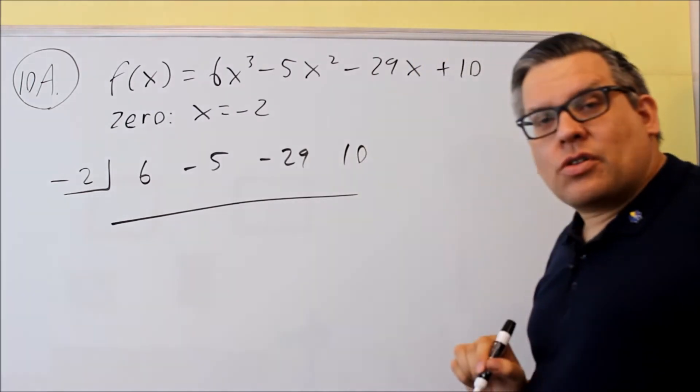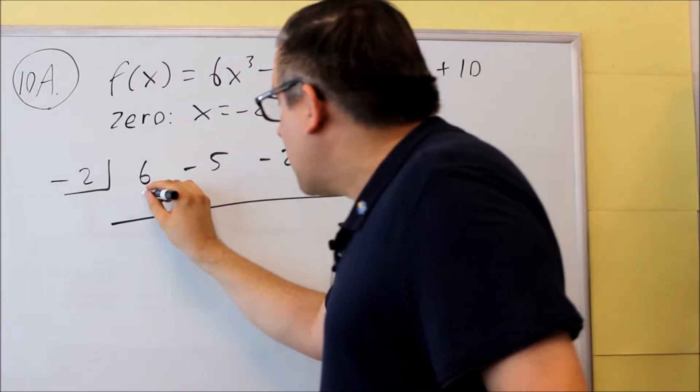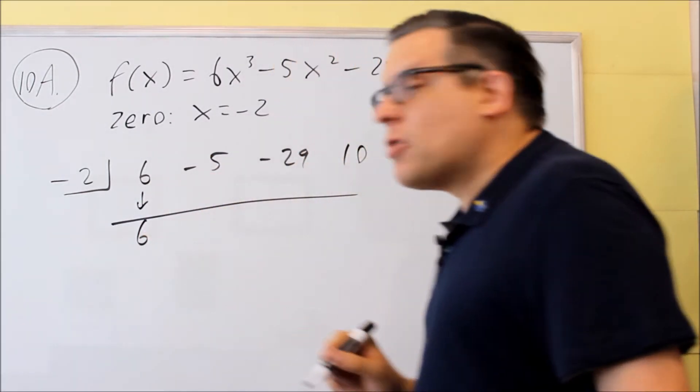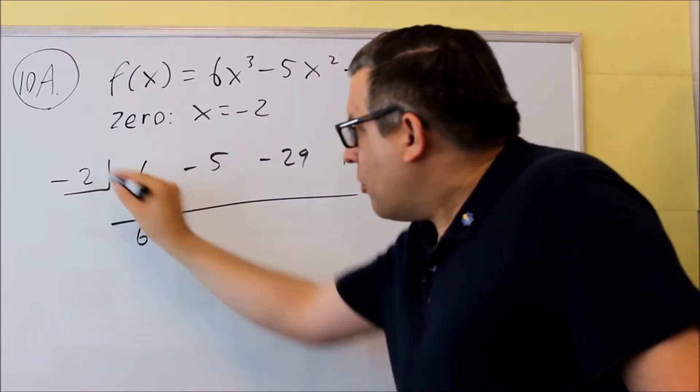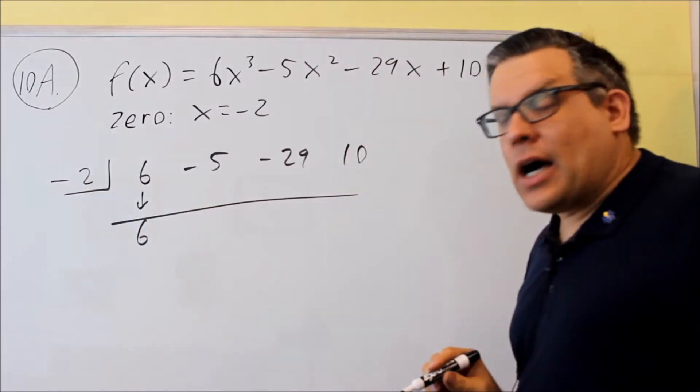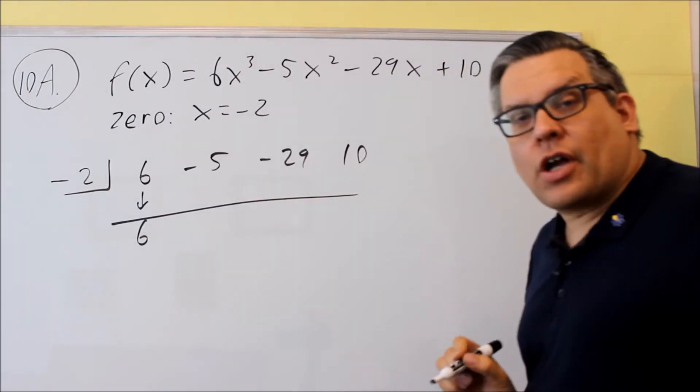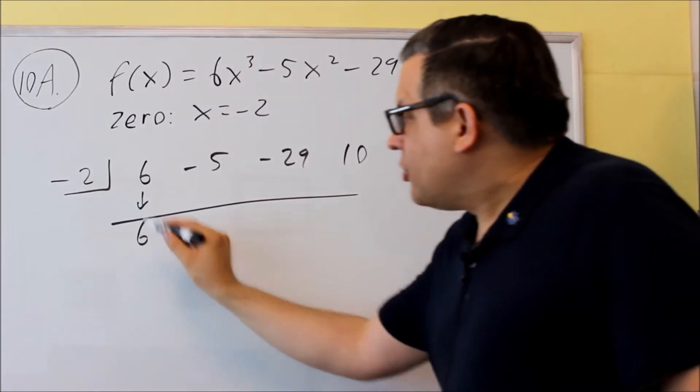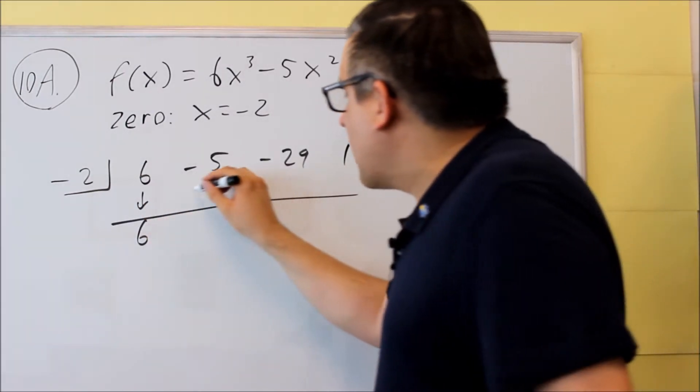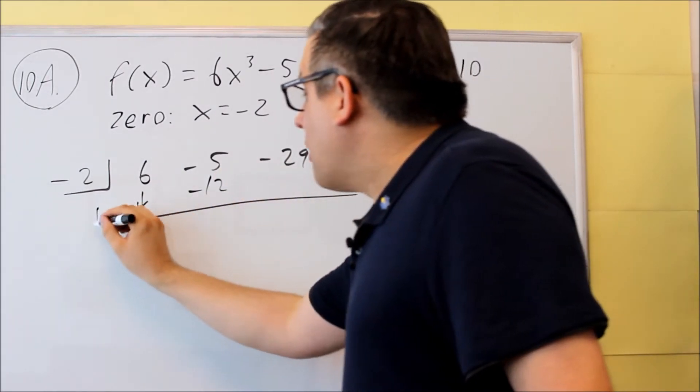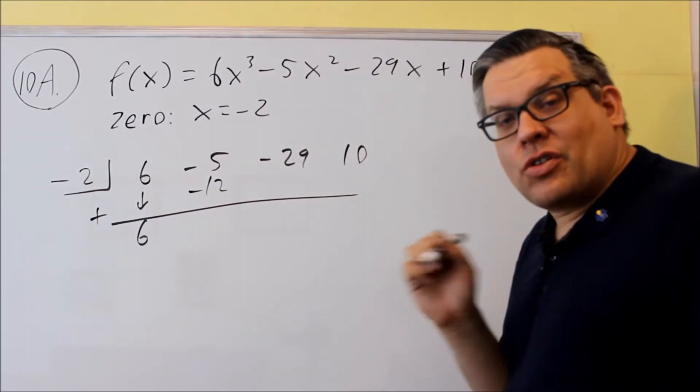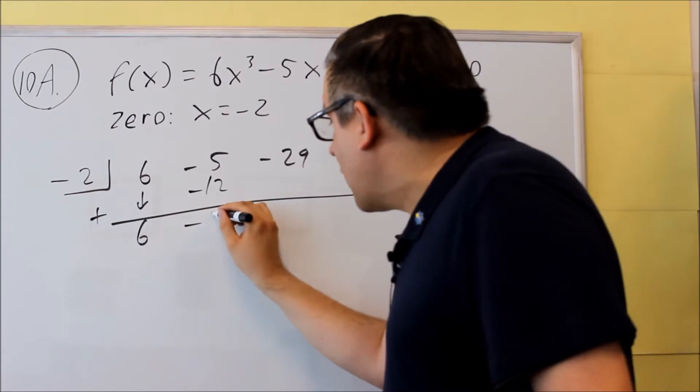Now let's do the synthetic division. We're going to drop the first number down always, so we get 6. You multiply by the number inside the box and you put your answer underneath the next number. 6 times negative 2 is negative 12. We're always adding whenever we do synthetic division. We're going to add that together and get negative 17.